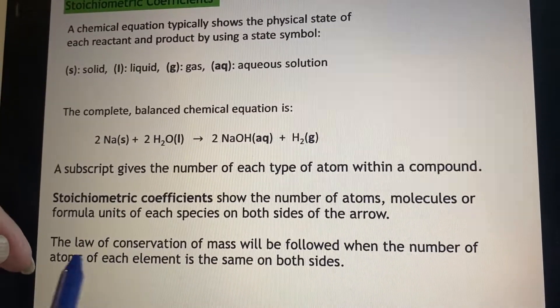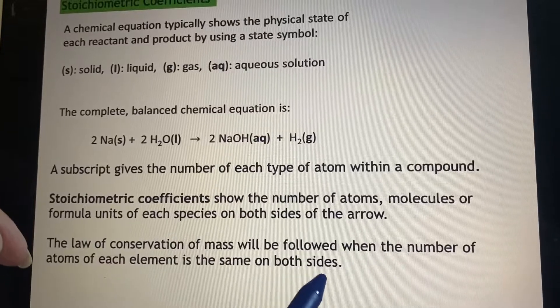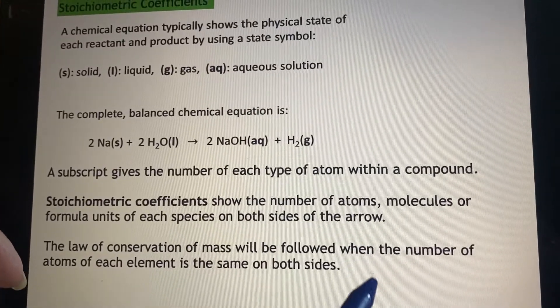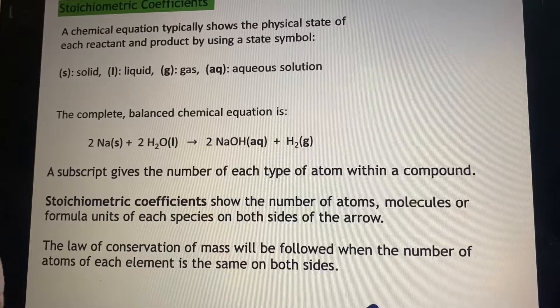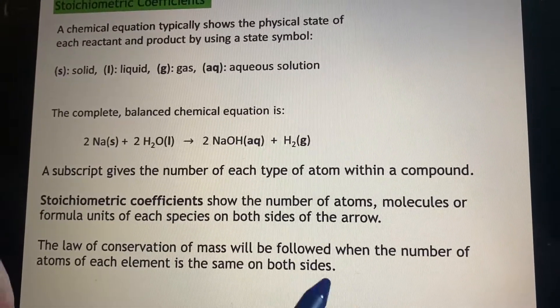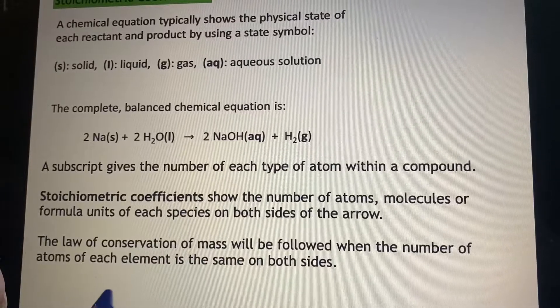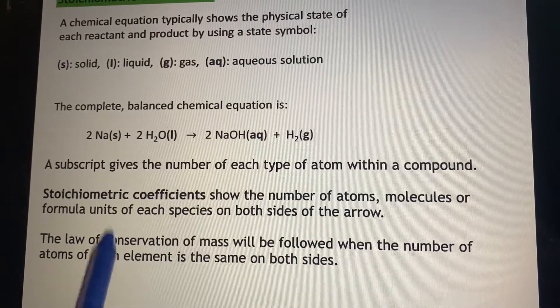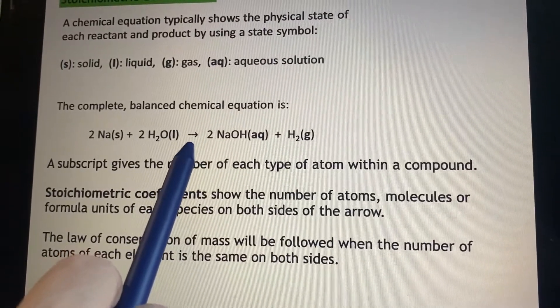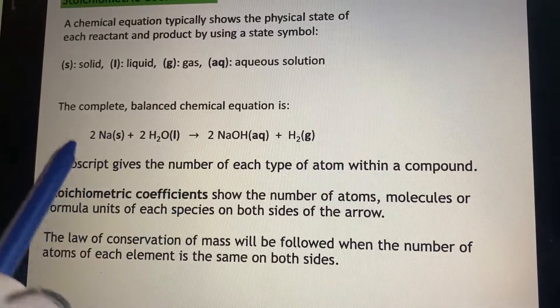Because we have to have the law of conservation of mass. We aren't going to have any of these atoms just spontaneously disappear or come into existence. We have to have the same number of atoms of each element on both sides of that symbol.